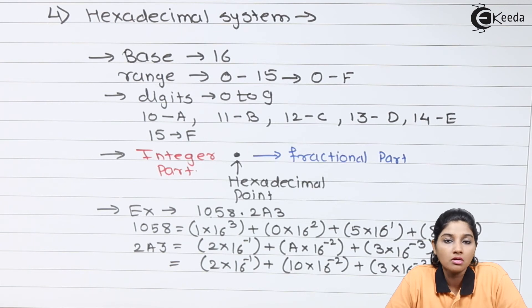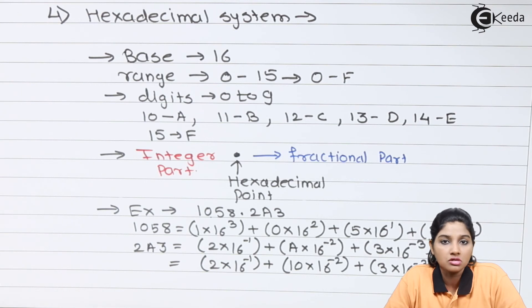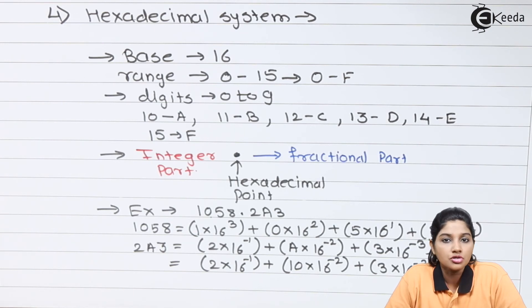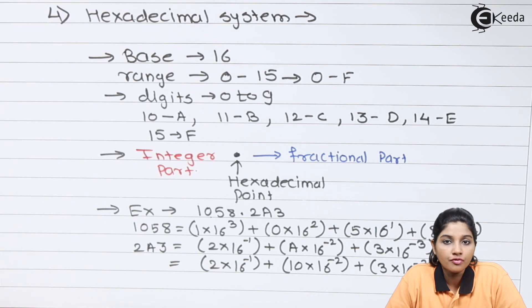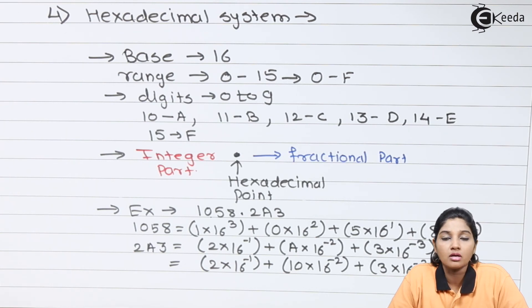These are the number systems which are very popular in digital communication: decimal number system, hexadecimal number system, binary number system, and octal number system. Every number system can be converted into another by using certain logic or operations. In summary: decimal has base 10, range 0–9; hexadecimal has base 16, range 0–15 with digits 0–9 and letters A–F; octal has base 8, range 0–7; and binary has base 2, range 0–1.